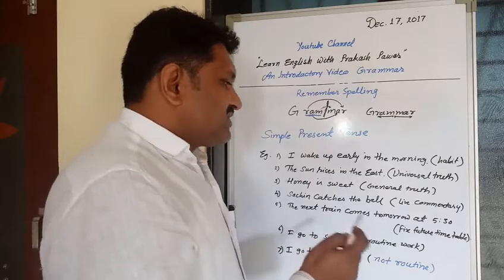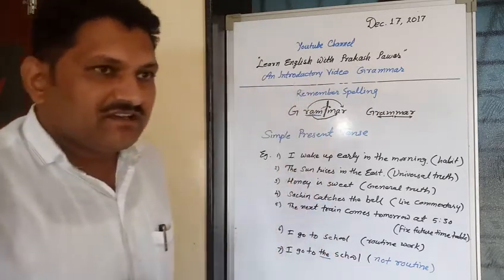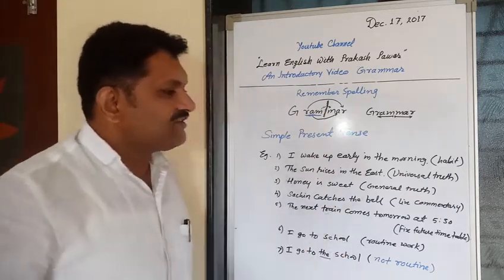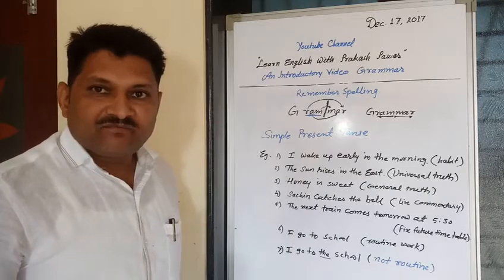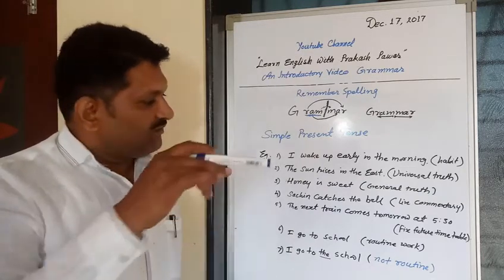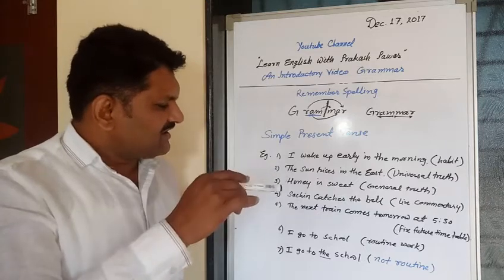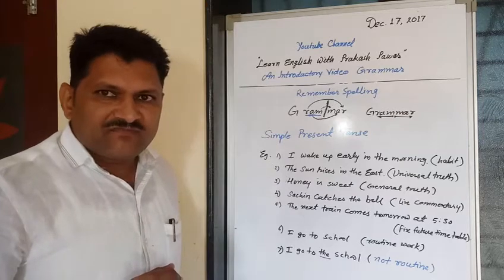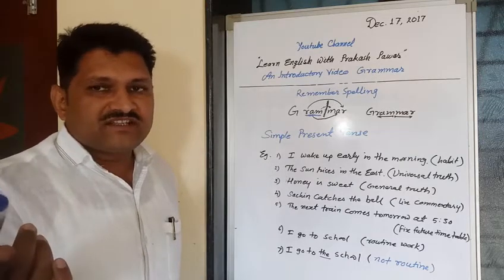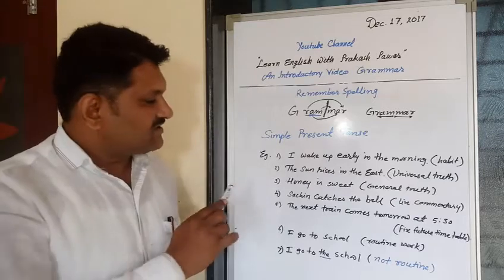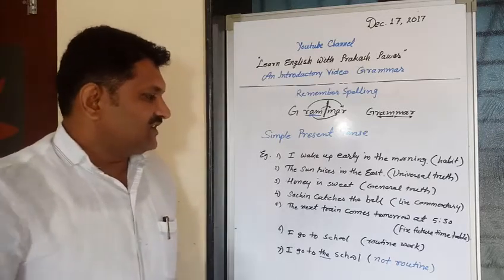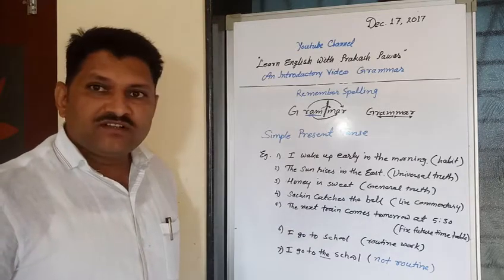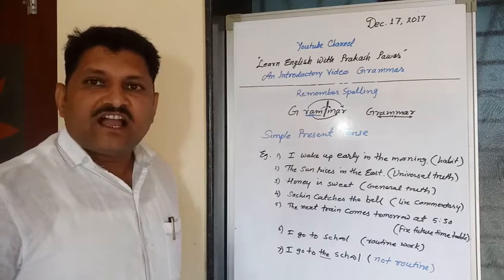For a fixed future timetable, we use simple present tense. For example, 'The next train comes tomorrow at 5:30' — it is a fixed timetable. We can also say 'The next train will arrive at 5:30 tomorrow,' but that future simple tense can also be expressed in simple present tense.